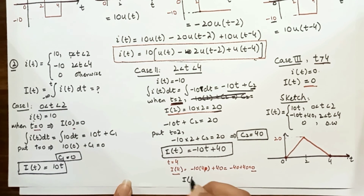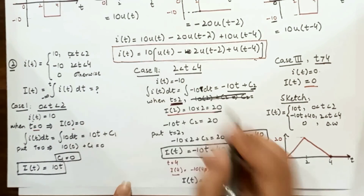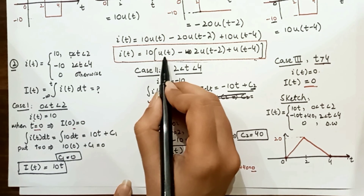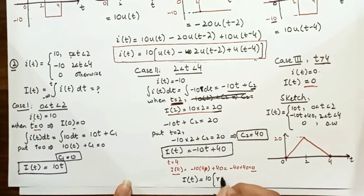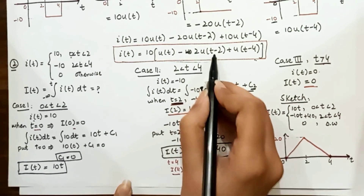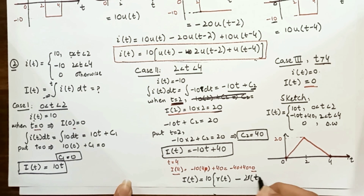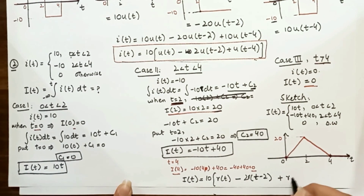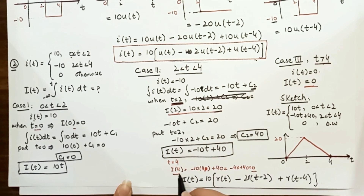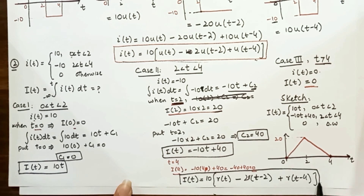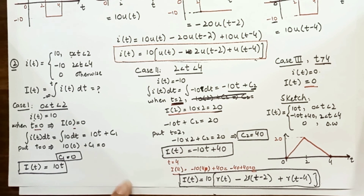We can now write the unit ramp function form: I(t) = 10·r(t) − 2·r(t − 2) + r(t − 4), where each u(t) term is replaced by the corresponding ramp function r(t). This is the value of the integral of i(t) expressed using ramp functions.